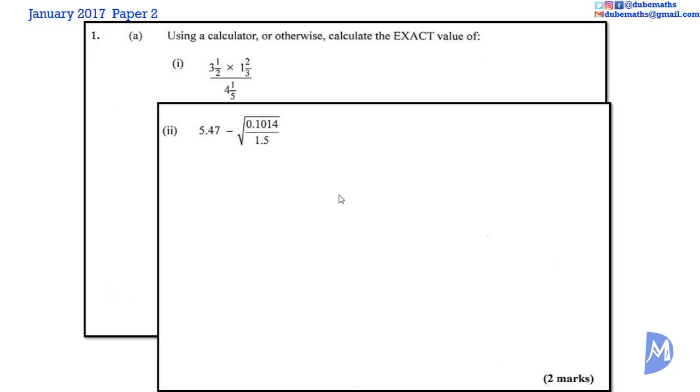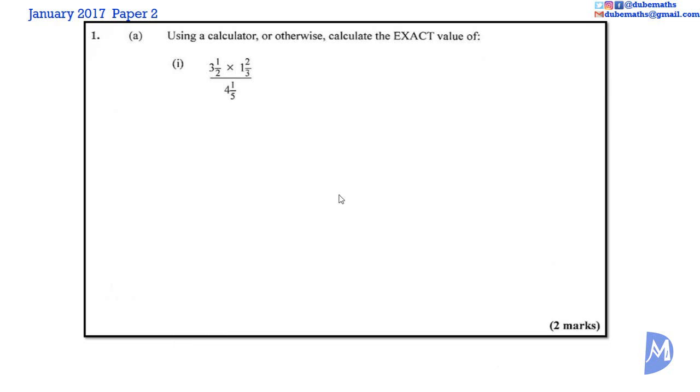Question 1a, part 1. We are asked for the exact value of this calculation. Remember that thirds are recurring decimals. So if we approximate this fraction to a decimal, we will not have the exact answer. We need to work with fractions to ensure that the answer is exact. A calculator that can work with fractions is very useful for this problem.